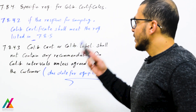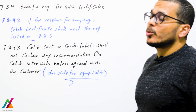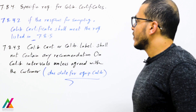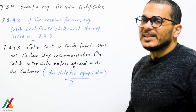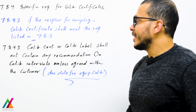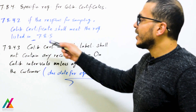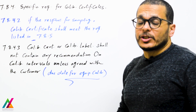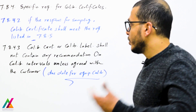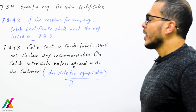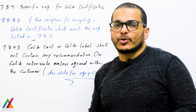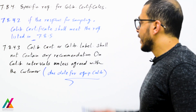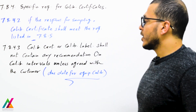Second point: if the lab is responsible for sampling, the calibration certificate shall meet the requirements listed in clause 7.8.5, reporting sampling, and that will be explained where necessary for calibration results.